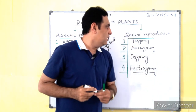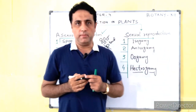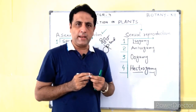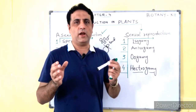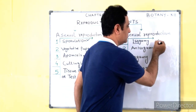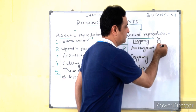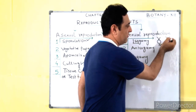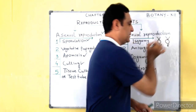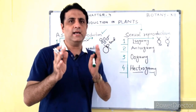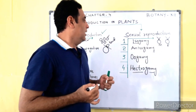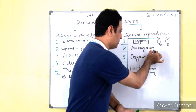Talking about isogamy: iso means same, gamete means gametes. It is a process in which male and female gametes are morphologically and physiologically very similar — those are called isogametes. Here the male gamete and female gamete both possess flagella and both have the same size and same shape, so we call them isogametes.